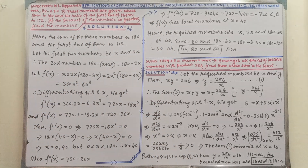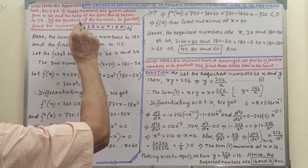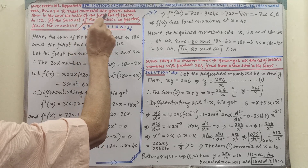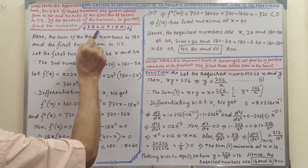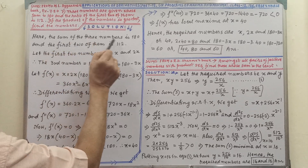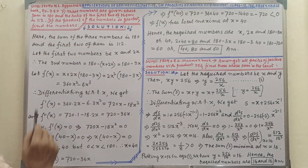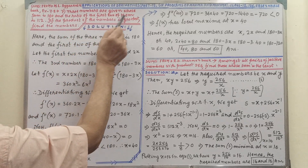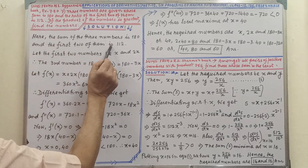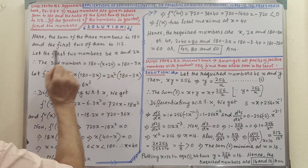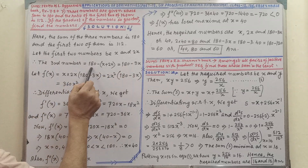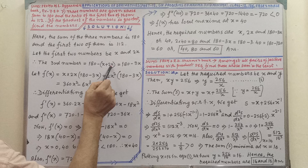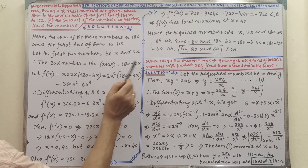Sum given from M.L. Aggarwal's book, Exercise 7.8, sum number 7. You will get the sum in your book and here also it is written clearly. Three numbers are given whose sum is 180. Pay your attention on the solution. The first two of them are in ratio 1 is to 2. Let the first two numbers be x and 2x. Therefore, the third number is 180 minus first and second, that is 180 minus 3x.